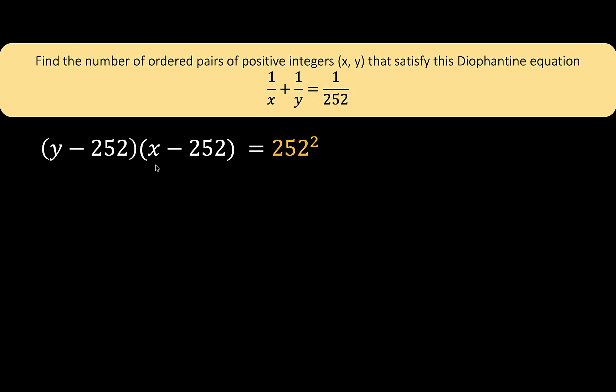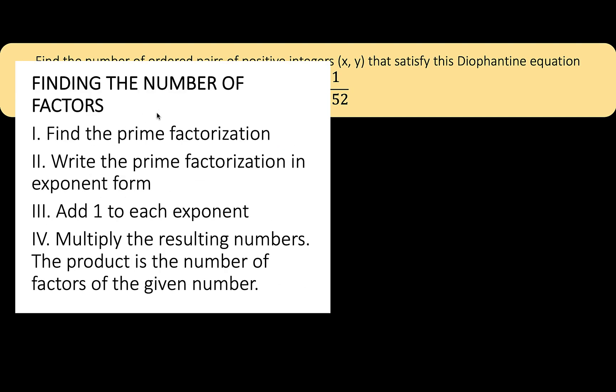Notice that we have here two factors. If you can get two factors at the right side, then y minus 252 would equal this first factor, and x minus 252 would equal this second factor. We therefore need to find all the factors of 252 squared, and there must be a lot of them. Fortunately, we have this process of finding the number of factors of any number. Let's demonstrate this first with a smaller number, say 12. How many factors are there in 12?